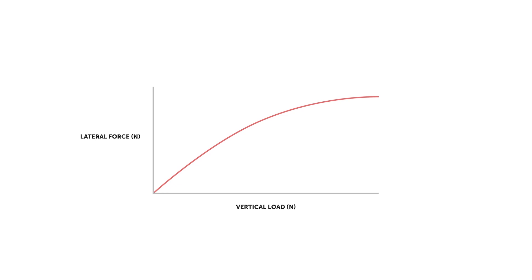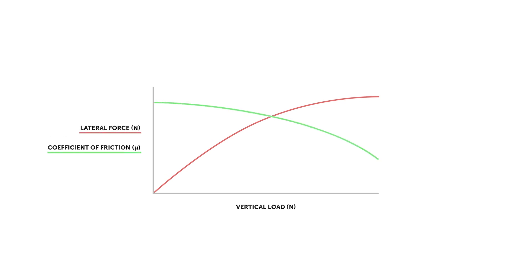Tyres are a massive subject all of their own — in my opinion they are probably the most complex part of a car, and they're not something we're going to look too deeply into in this fundamentals course. But vertical load sensitivity is something we'll need to touch on to understand suspension tuning. If we simplify down the lateral forces and look at them in terms of coefficient of friction, as we increase the vertical load, we decrease the coefficient of friction, which is what we see here in this plot.